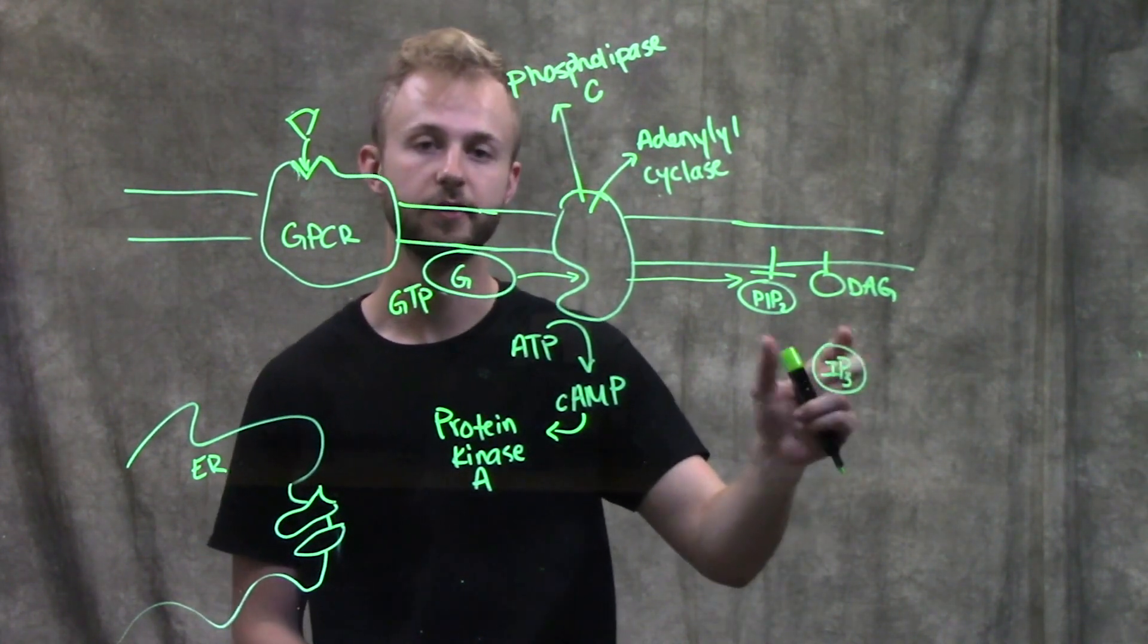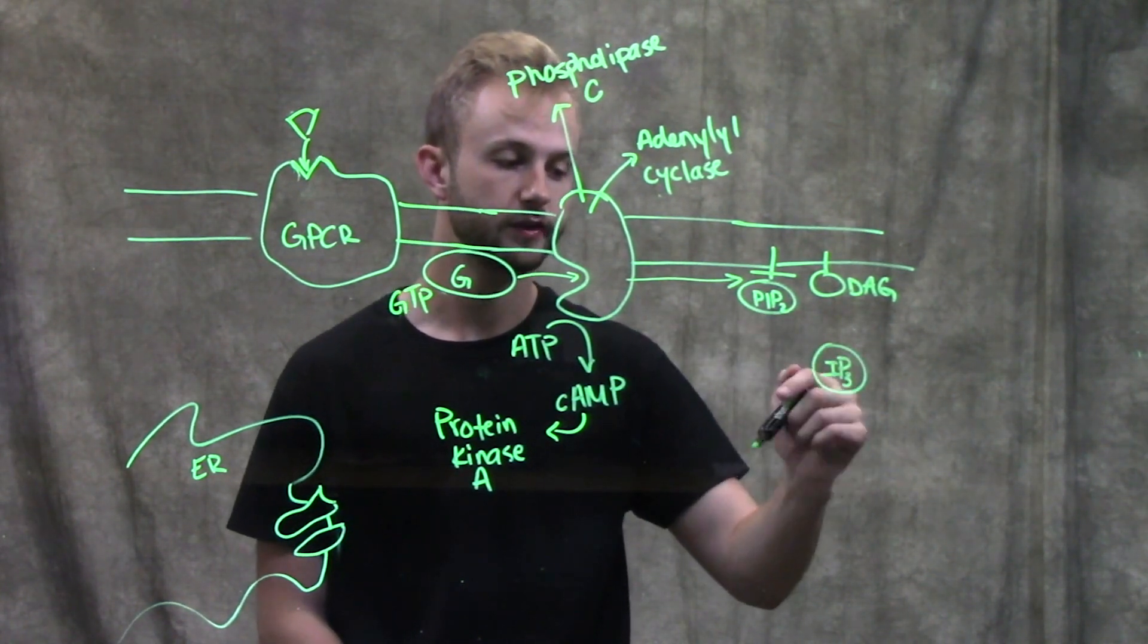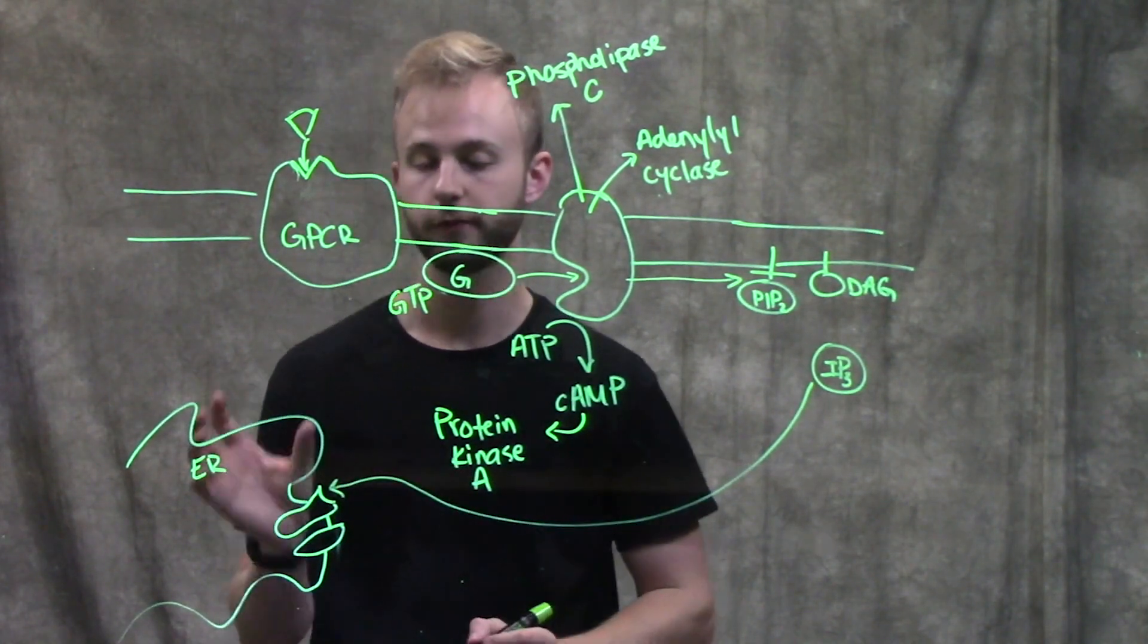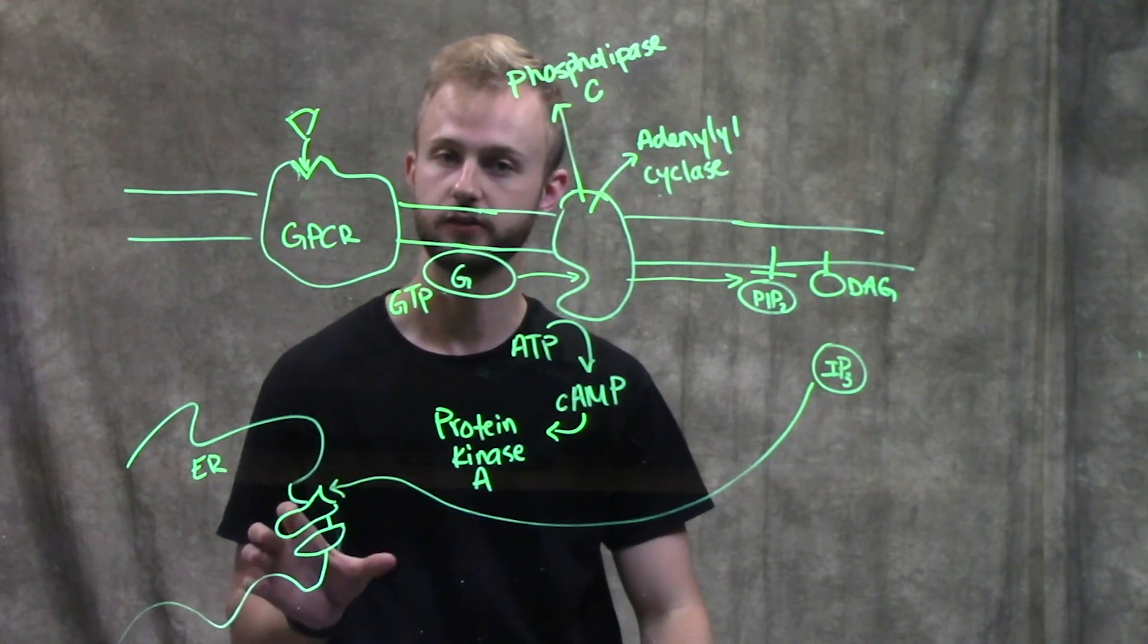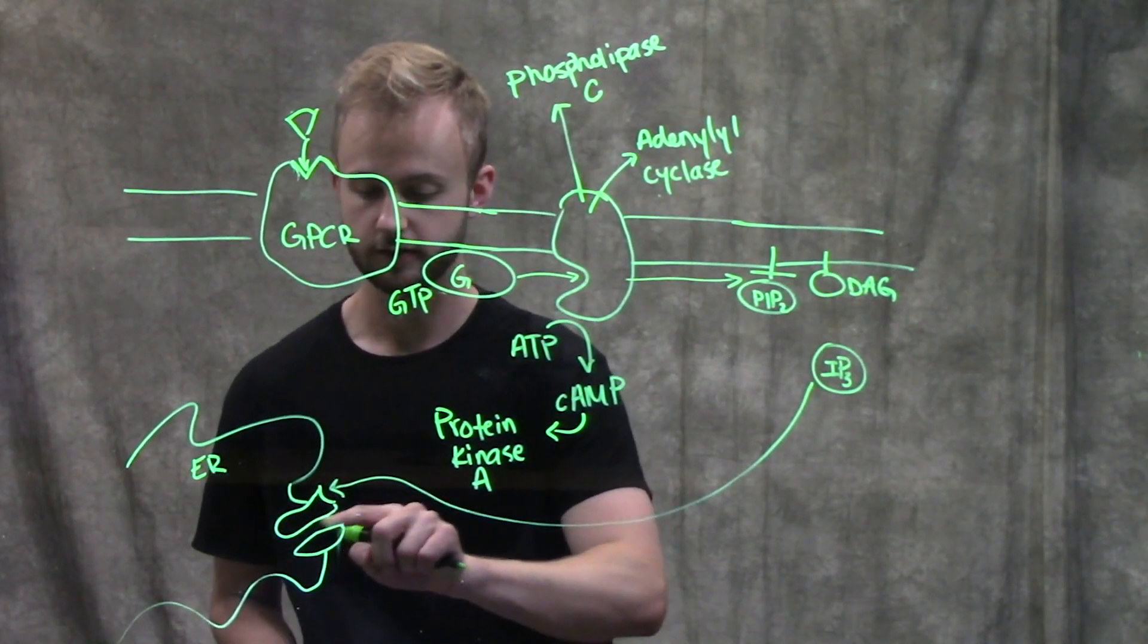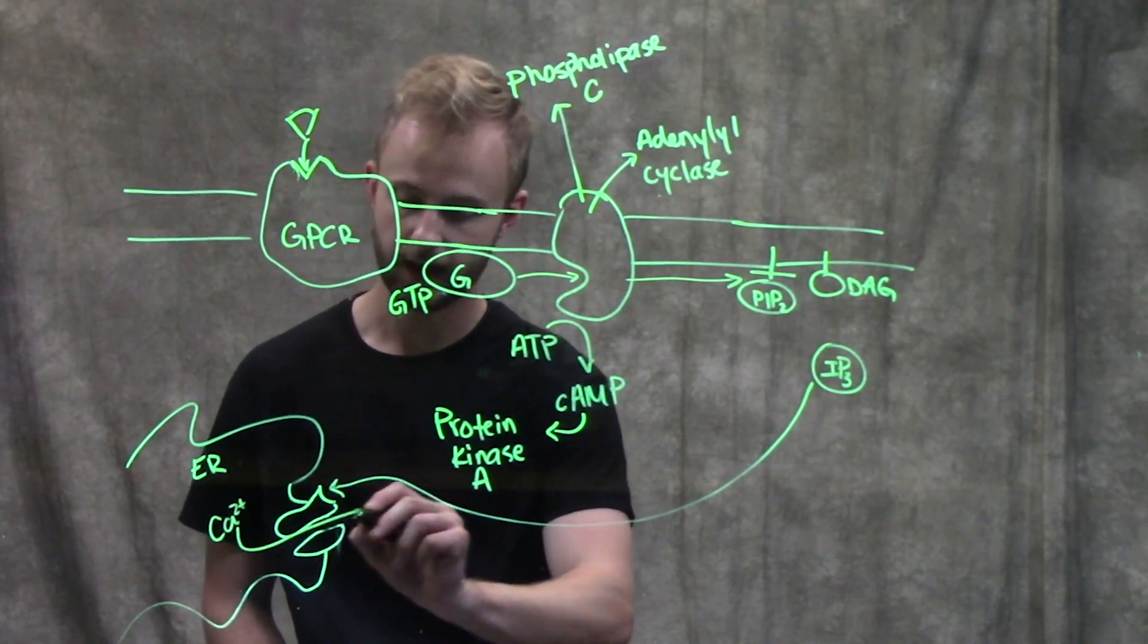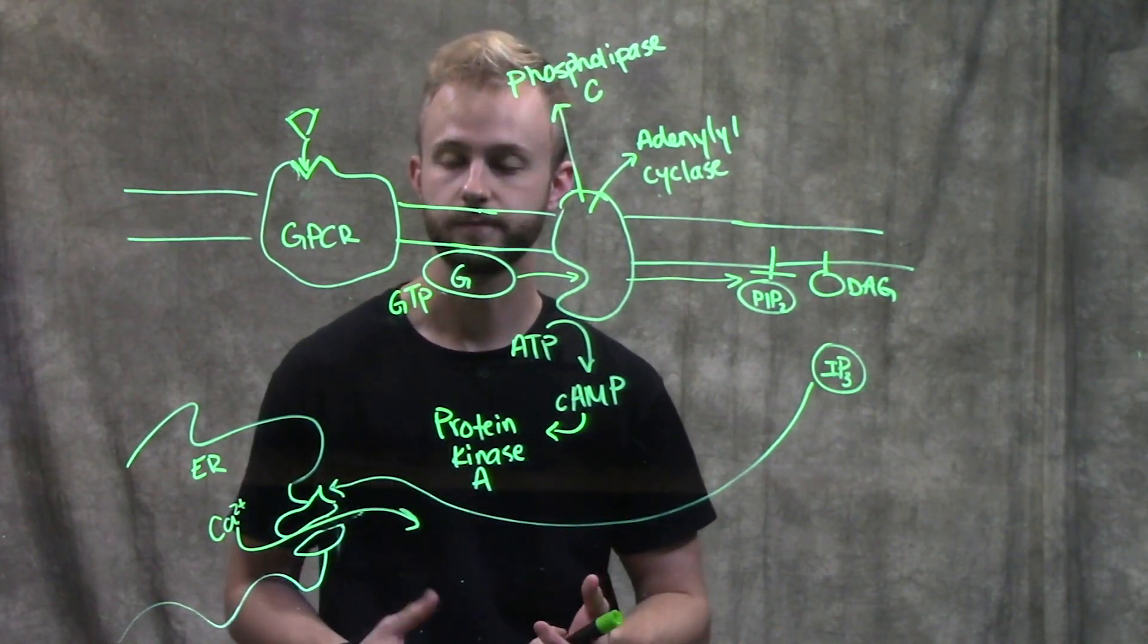IP3 is going to be the really important one in this pathway. So what IP3 will now do is it will go to the endoplasmic reticulum and bind to a ligand gated calcium channel. And when it binds to this channel, it causes the gate to open.